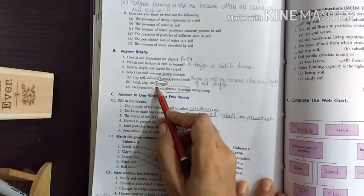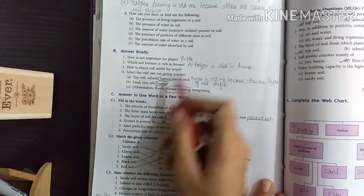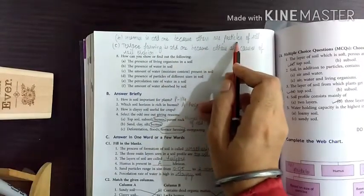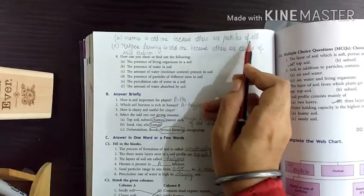Next: sand, clay, silt, humus. Its answer is, humus is odd one because others are particles of soil. I am again repeating.